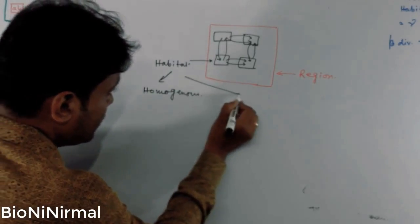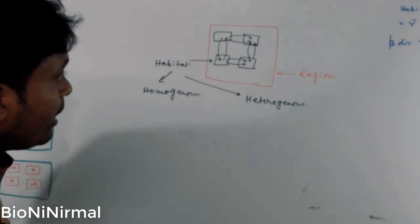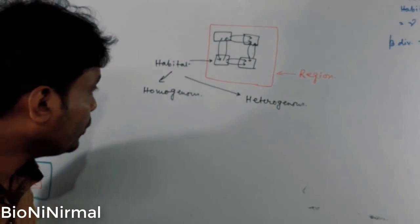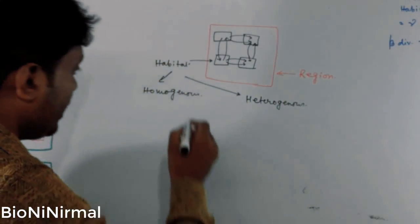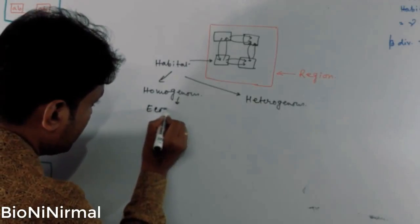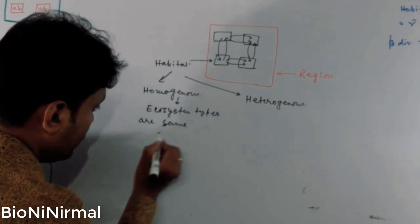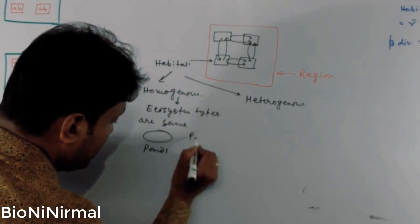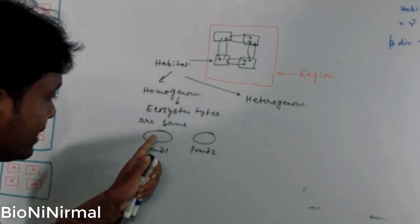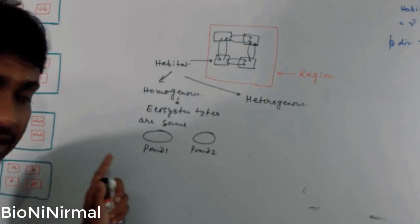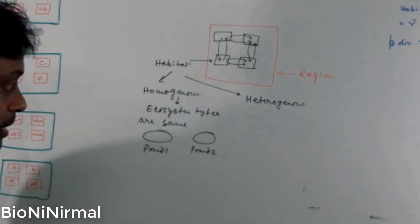A habitat may be a homogeneous habitat or a heterogeneous habitat. Homogeneous habitats in a region are those where the ecosystem types are the same. For example, suppose in a region there are two ponds — pond one and pond two. These are homogeneous habitats because the same types of species found in pond one can also be found in pond two.